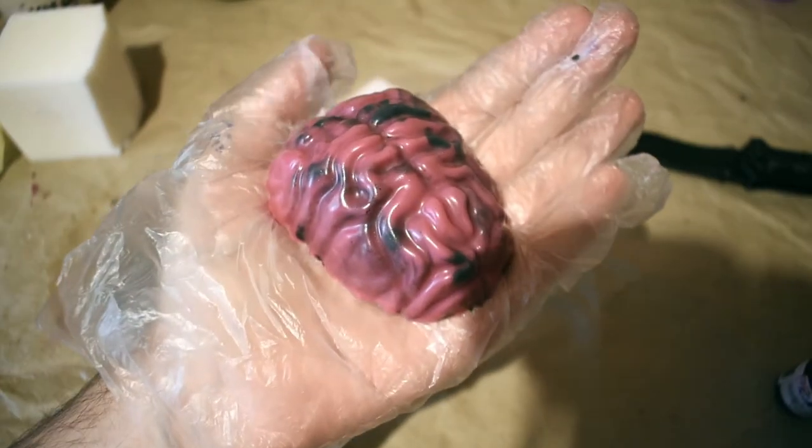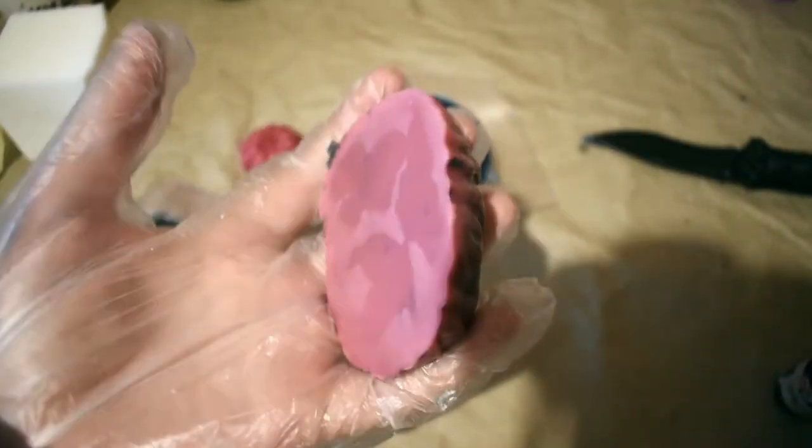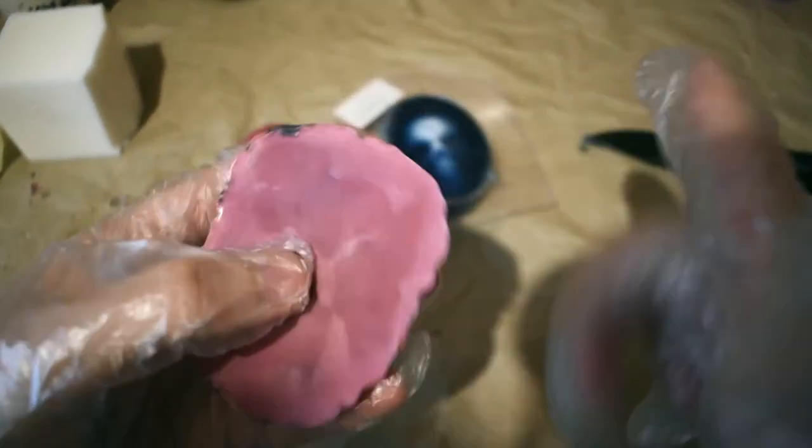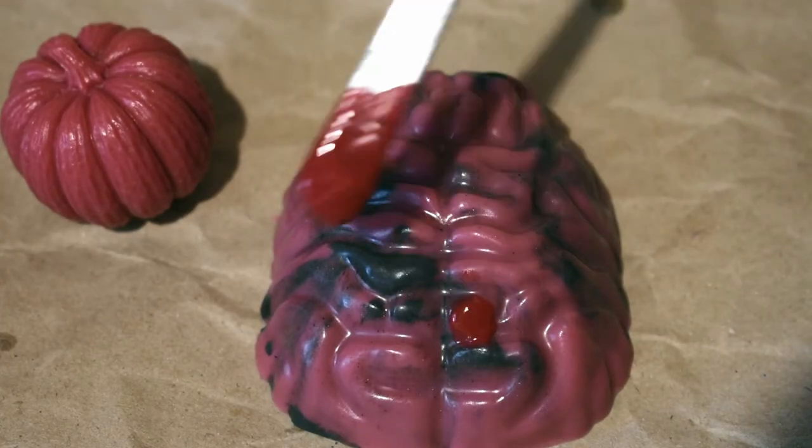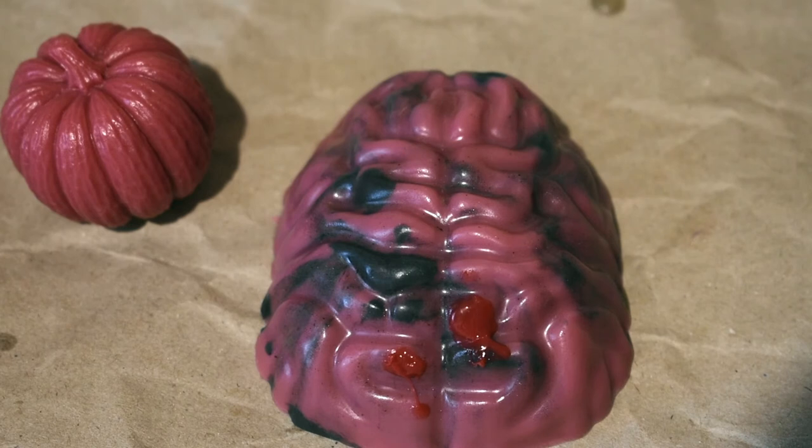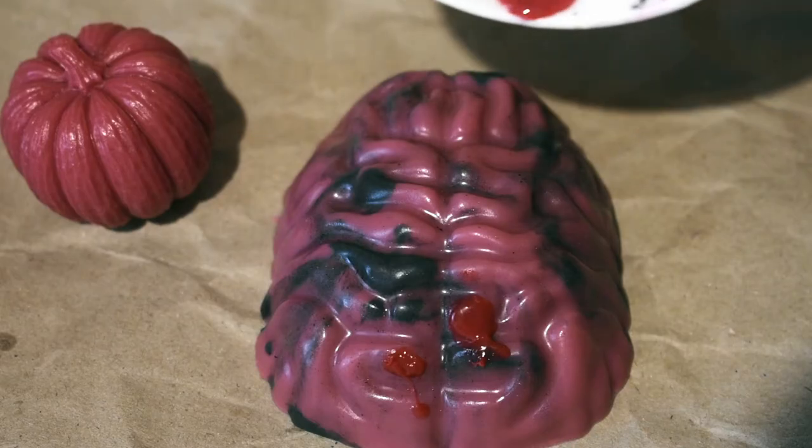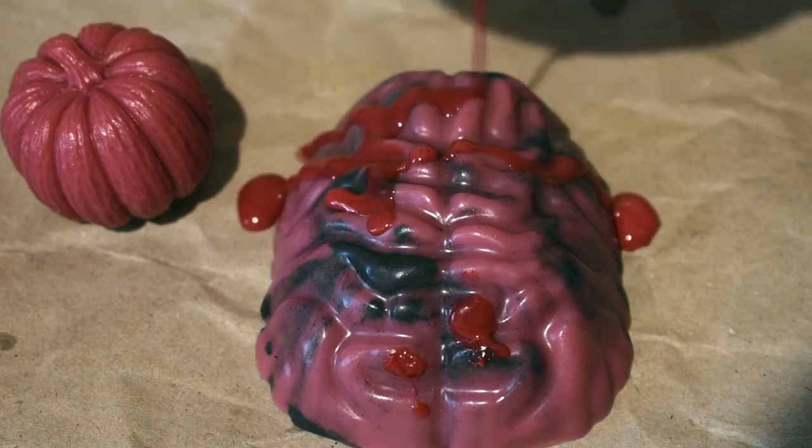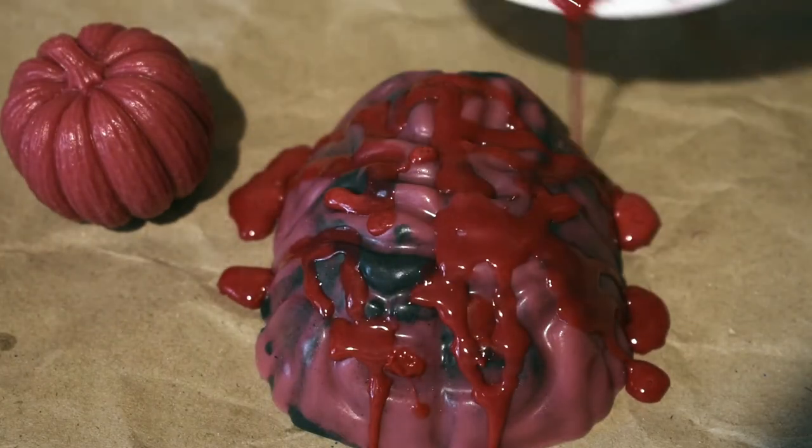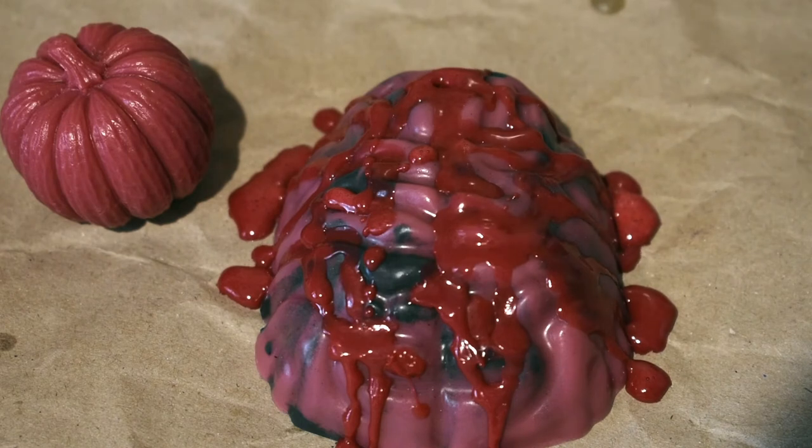So now I want to add some blood. I just pour some red liquid soap on top of my zombie brains. I think it's too much blood, but it will look okay too.